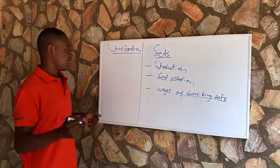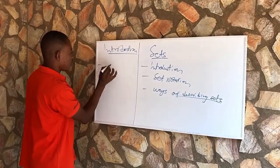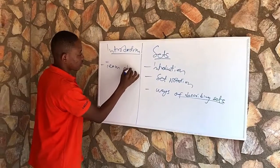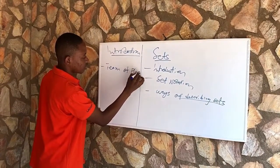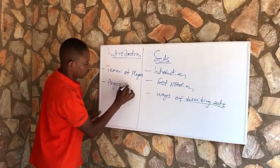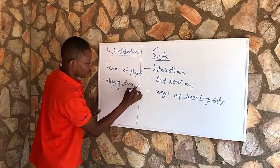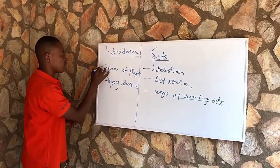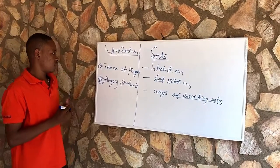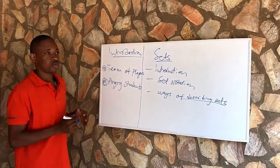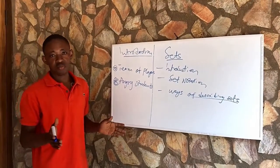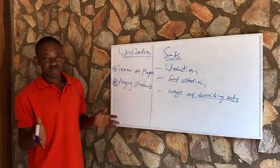So let's look at these two examples. We can have a team of players and angry students — let's call these A and B. Looking at example A, a team of players: when we talk of a team of players, we can identify all the members that form the team that are playing for a specific team.